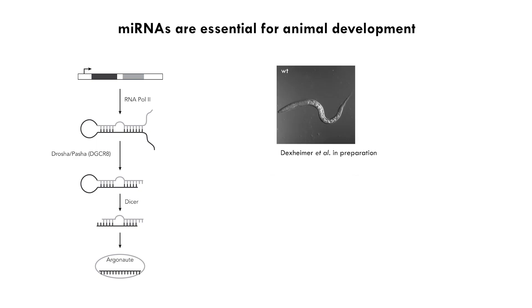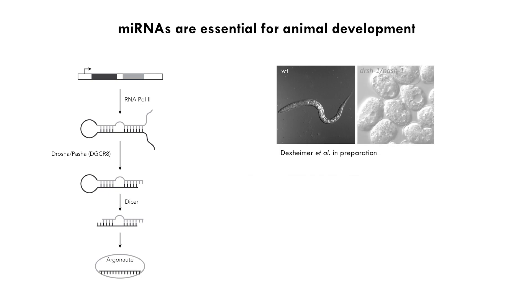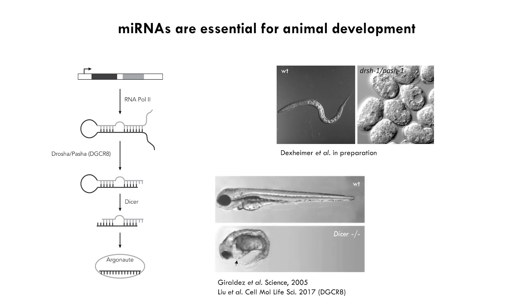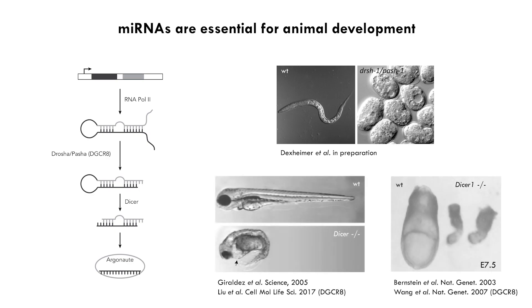C. elegans larvae, which would normally develop into beautifully structured animals, completely fail to develop in the absence of Drosha and its cofactor Pasha. Zebrafish also fails to develop normally in the absence of Dicer, and so do mice.